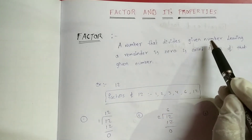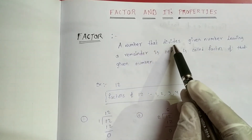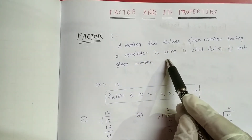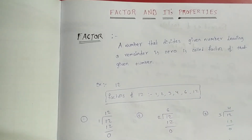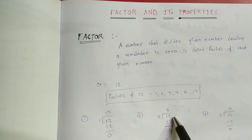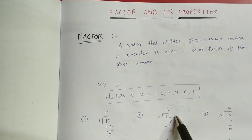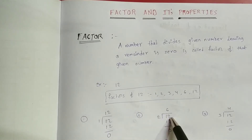If we divide a number and the remainder is zero, it is called a factor. For example, if we divide 12, we divide 2 into 12. The remainder is zero, so 2 is a factor of 12.